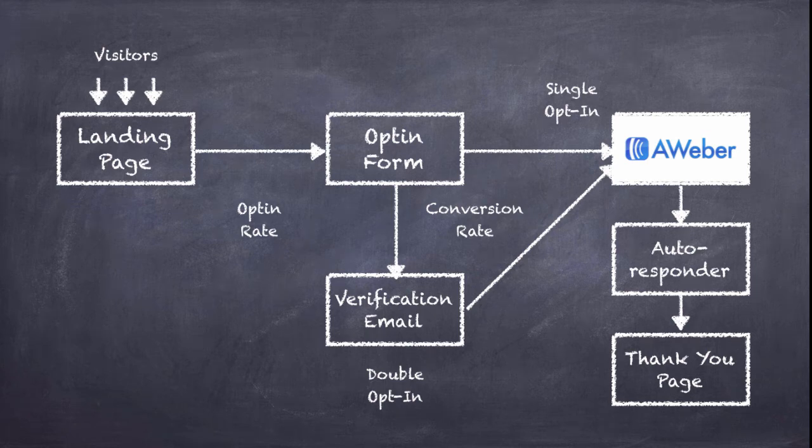In part one of this email marketing basics tutorial, I covered a lot of concepts and components of email marketing, mostly on how to get subscribers, how to build an email list, and what kind of email marketing software to use. Now in part two, we're going to talk about what happens after you have subscribers in your Aweber list — how do you contact them and what are the other concepts or terms involved.